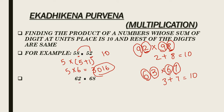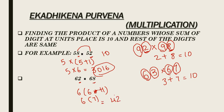Again, in this example, the numbers at the units place when added — 8 plus 2 — give 10, and the numbers at the tens place are same, that is 6. So we can apply Ekadhika Purvena here. 6 into 6 plus 1, that is 6 into 7, equals 42. And 2 into 8 is 16. So the answer is 4216.